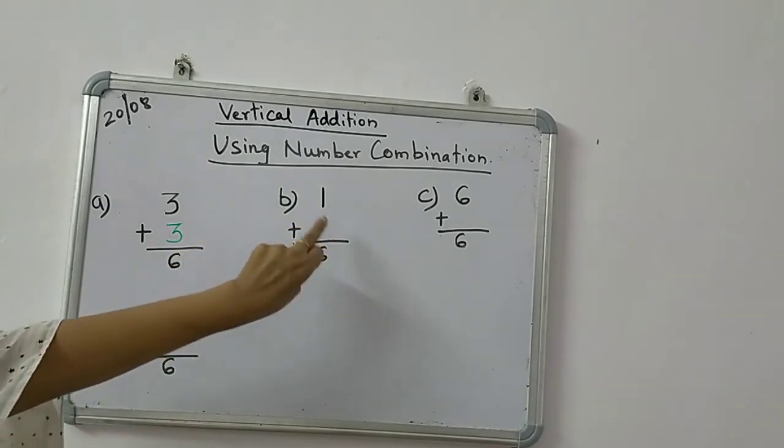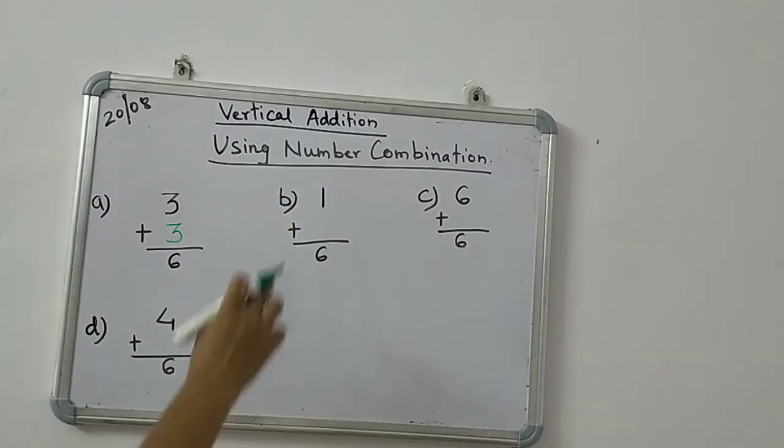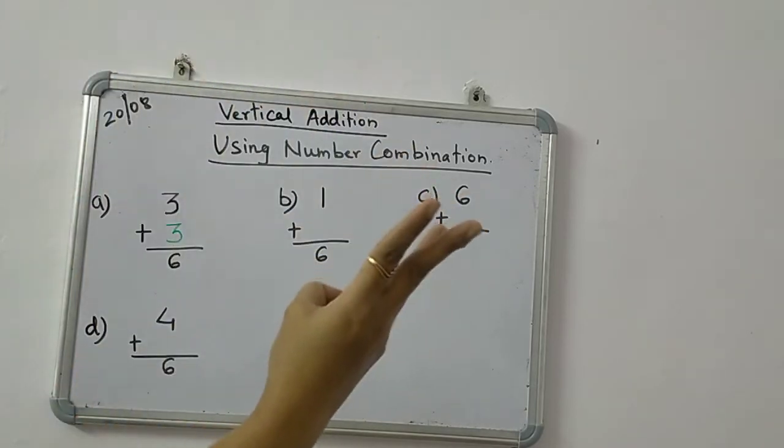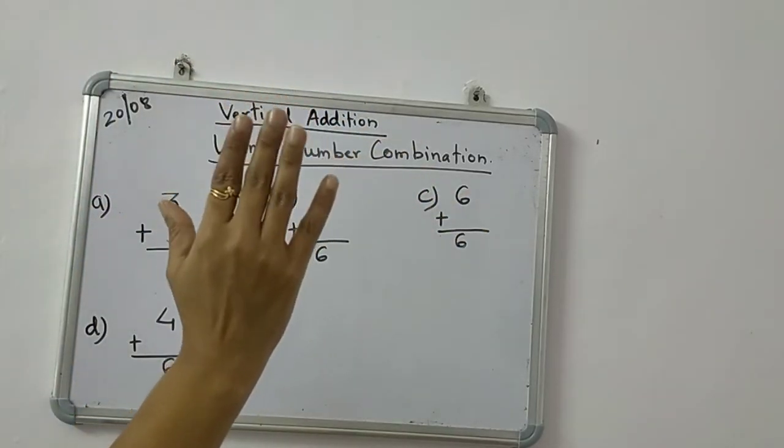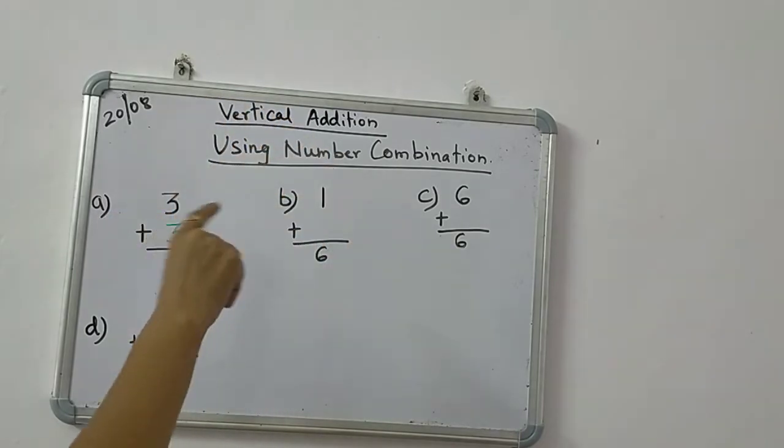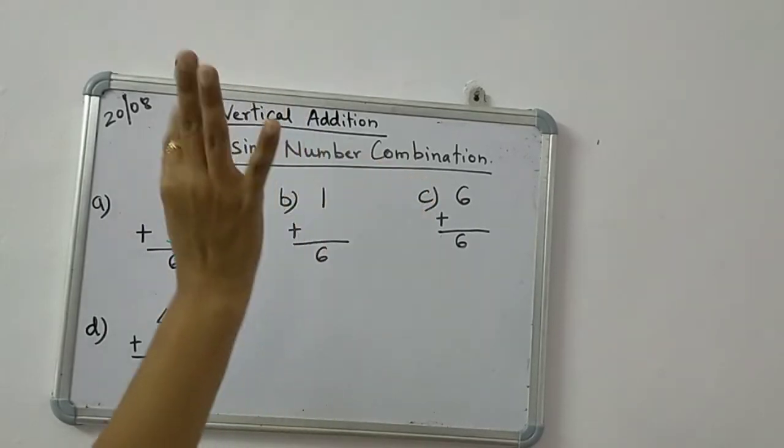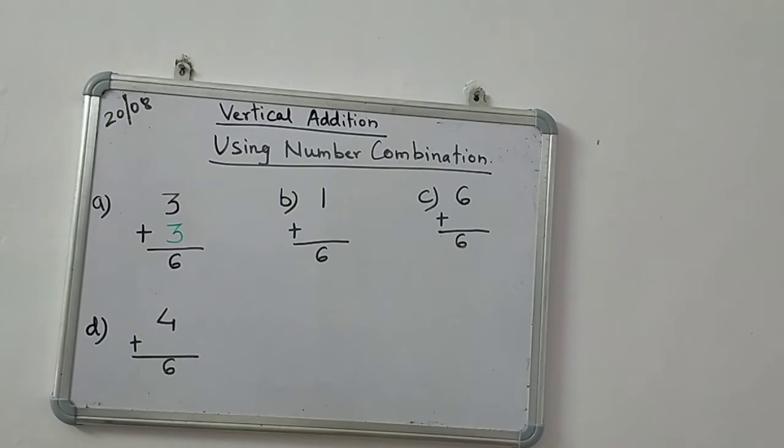One - what will you add to 1 to get 6? 1 ke baad aap 6 tak counting karo. 1 ke baad dekho: 2, 3, 4, 5, 6. So how much do we have to add? 5. Dekho, 1 ke baad 2, 3, 4, 5, 6. To reach 6, we have to add 5.